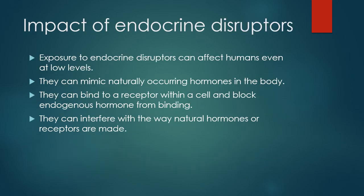Exposure to endocrine disruptors can affect humans even at low levels because they can mimic naturally occurring hormones in the body. They can bind to a receptor within a cell and block endogenous hormones from binding. They can also interfere with or block the way natural hormones or receptors are made.